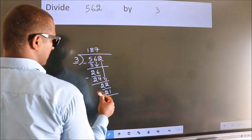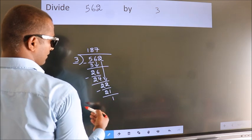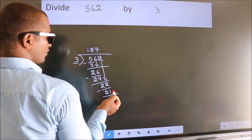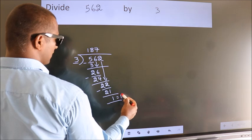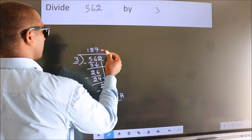Now, we subtract. We get 1. No more numbers to bring it down. So, we stop here. This is our remainder. This is our quotient.